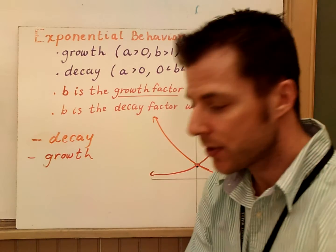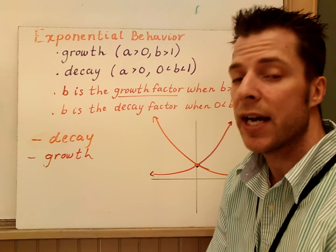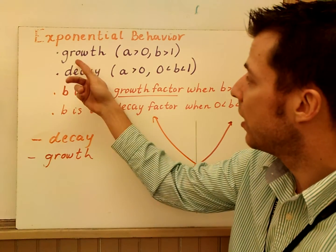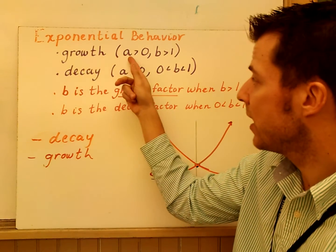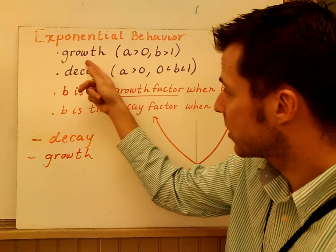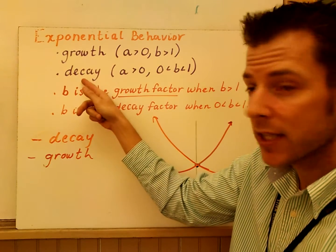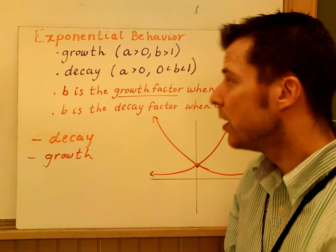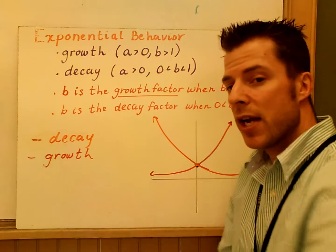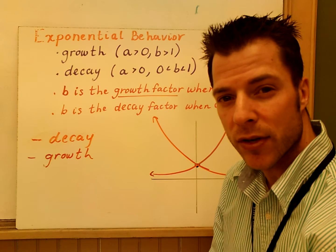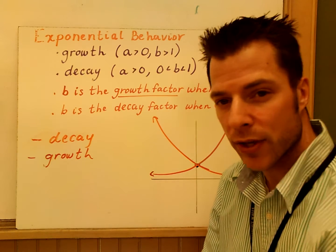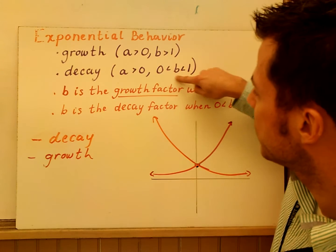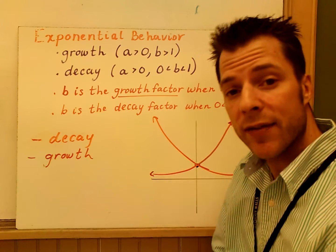There are two types of exponential functions you can have. You can have either growth or decay. Exponential growth happens when a is greater than 0 and b is greater than 1. This would be exponential growth. You have decay when a is greater than 0, but b is between 0 and 1. So, notice that in both cases, your a value is going to be greater than 0. So, that a doesn't tell you growth or decay, it's really b. If b is greater than 1, you have growth. If b is between 0 and 1, you have decay.